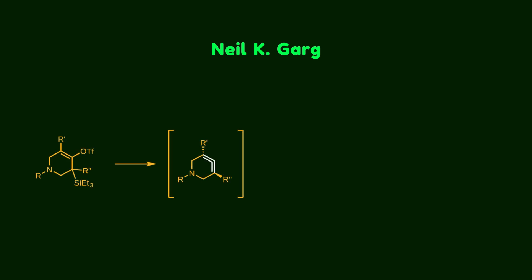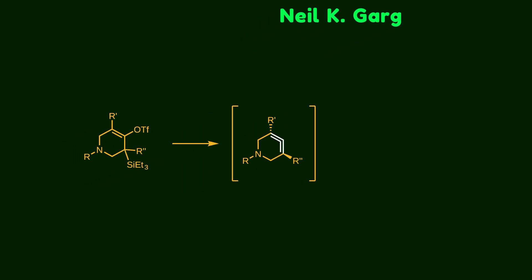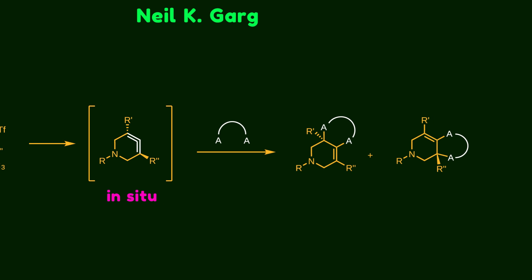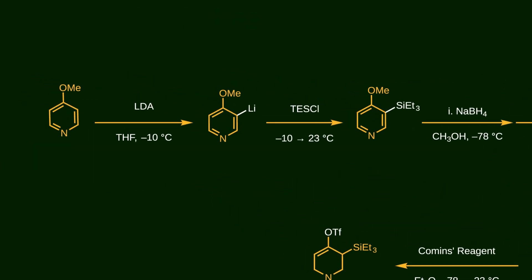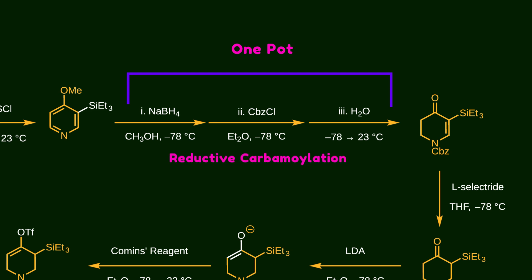In one notable work, the group developed an effective approach for creating azacyclic allenes under mild reaction conditions. This highly reactive intermediate is generated in situ, without isolation, and is trapped as a dienophile in a Diels-Alder reaction. Two possible products can form depending on the regioselectivity of the reaction. The synthesis of azacyclic allene begins with commercially available 4-methoxypyridine, which undergoes ortho-silylation to yield an acyl-substituted pyridine. The methoxy group directs lithiation at its alpha position, after which a triethylsilyl group is installed at the free position of pyridine. A one-pot procedure involving reductive carbamylation and hydrolysis then provides a vinylogous amide. Finally, L-Selectride as a nucleophilic hydrogen source triggers a 1,4-addition to the conjugated ketone.